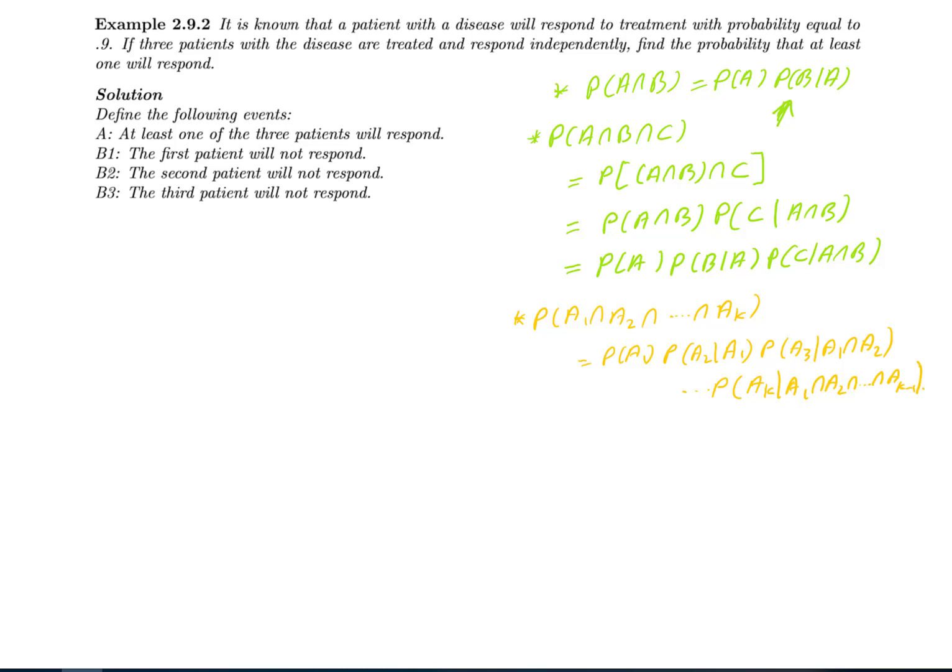I define the following events: A = at least one of the three patients will respond; B1 = the first patient will not respond; B2 = the second patient will not respond; B3 = the third patient will not respond. There are three patients, so consider event A: at least one of the three patients will respond.